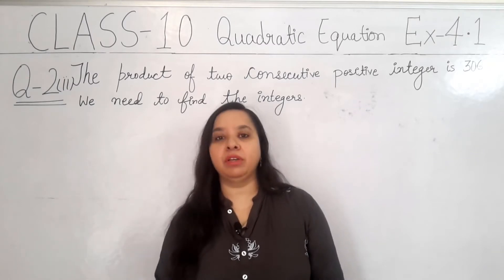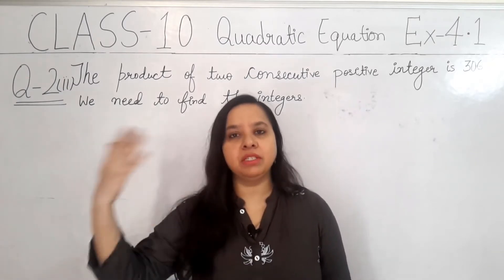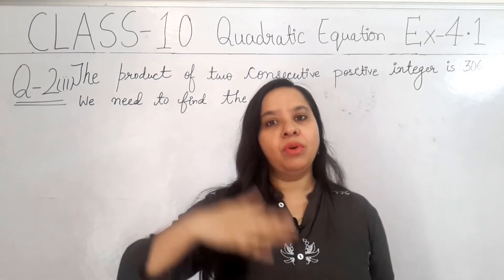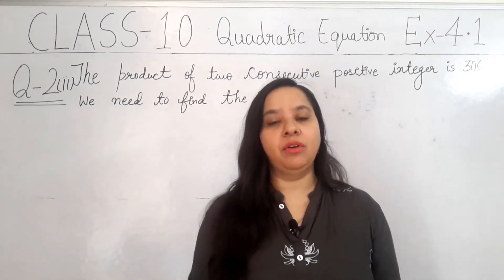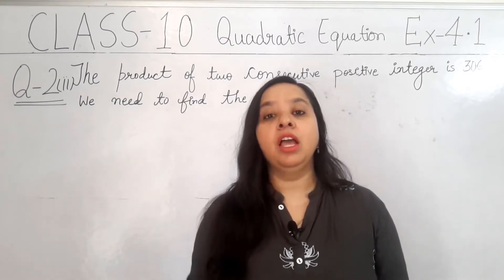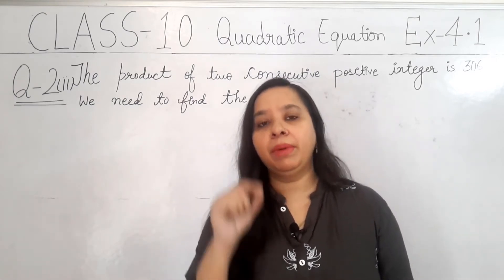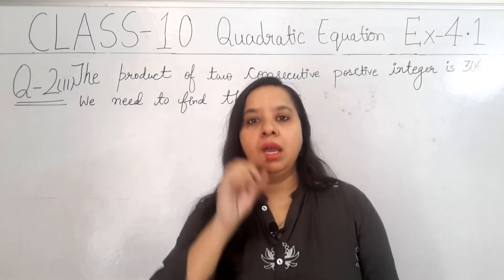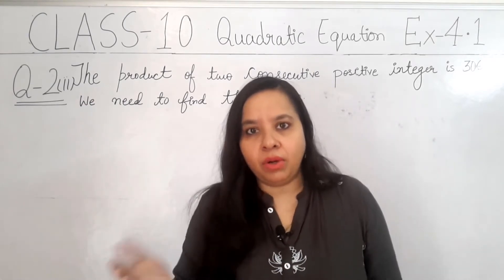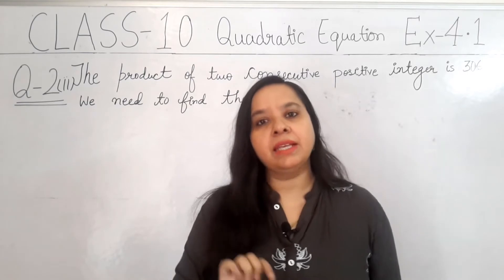Now, let me tell you about consecutive. What is consecutive? After one number, the next one. 4, 5 is consecutive. 10, 11 is consecutive. 9, 10 is consecutive. 3, 4 is consecutive. So, if there is one consecutive number x, then what will be the other one? We have two consecutive numbers. If there is one x, then the other one will be one more. So, if there is one x, then what will be the other one?